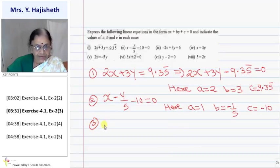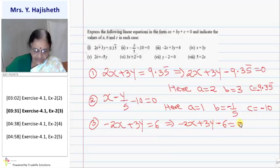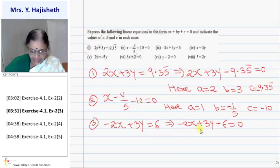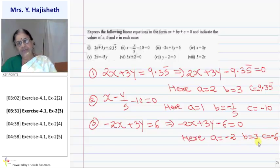Third question: it is minus two x plus three y equals six. So I write it as minus two x plus three y minus six equals zero. This is in general form. Now after getting it in general form, I write down a, b and c: a is minus two, b is three and c is minus six.